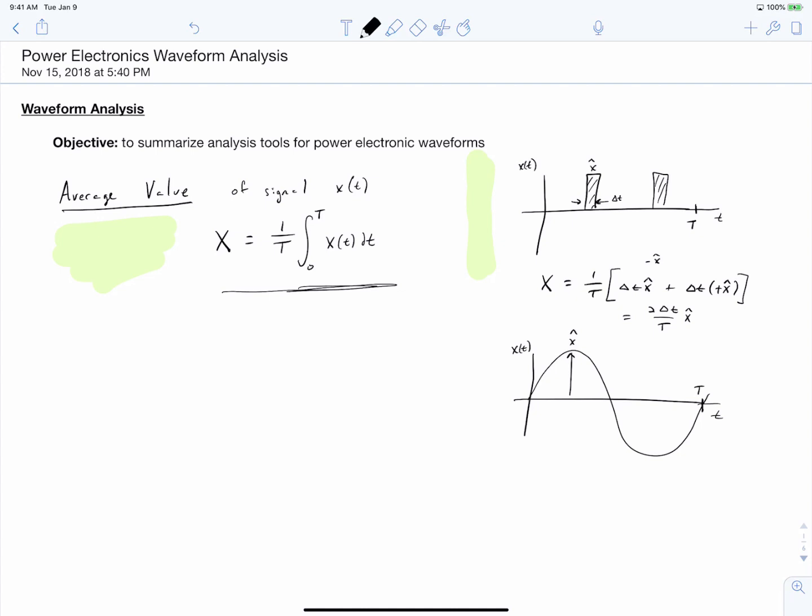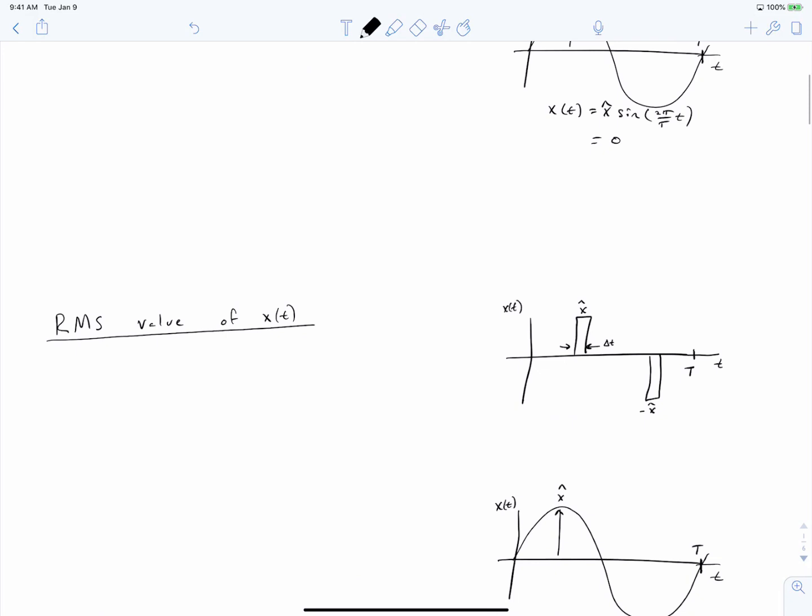We can repeat the same thing with a sinusoid. Here, x of t is equal to x hat times the sine of 2 pi over the period times time. Clearly this has a zero average.